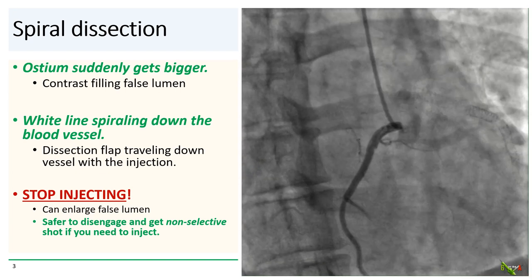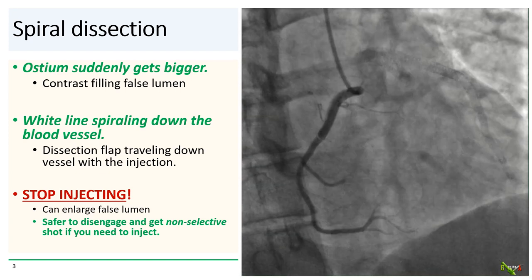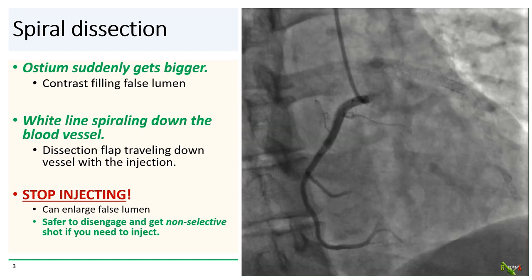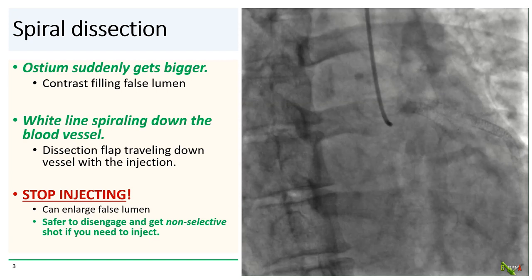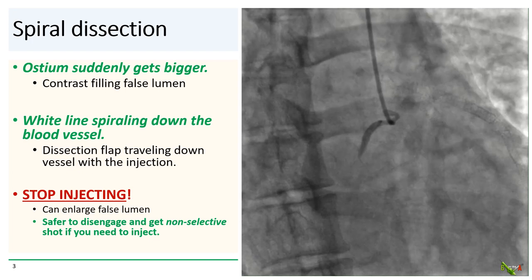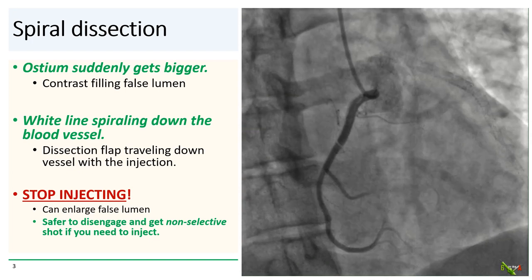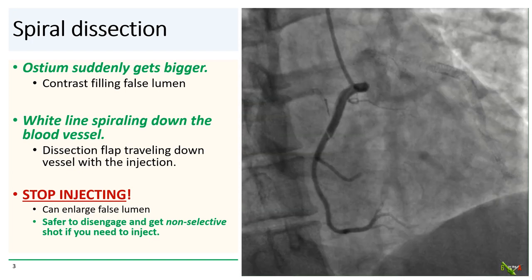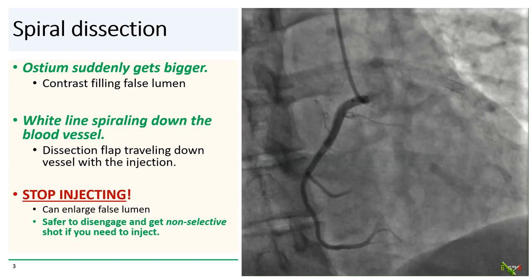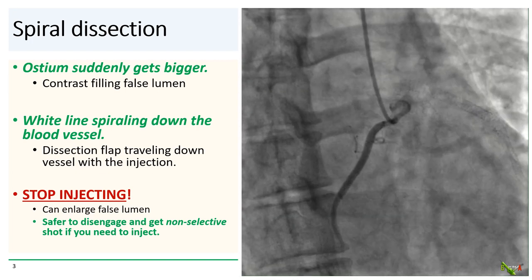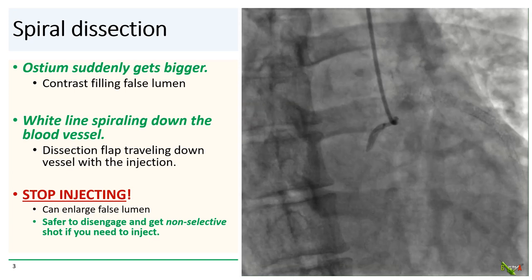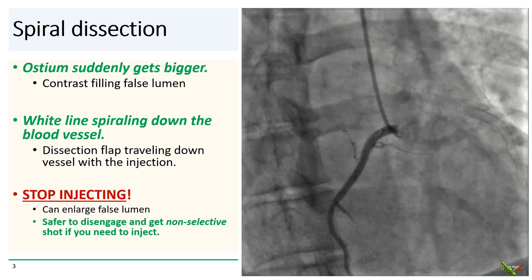The first thing you do is stop the contrast injection. Contrast injection can continue to enlarge the false lumen. Avoid injection if you can, and if you must inject to see where your wire is going, it is safer to disengage your catheter and get non-selective shots, although obviously the image quality is going to suffer.